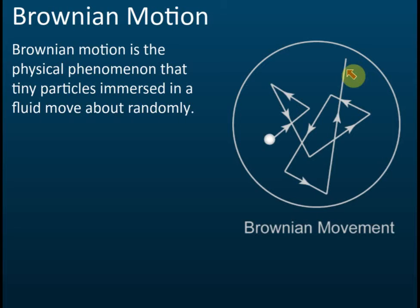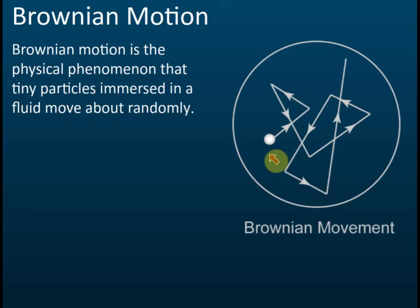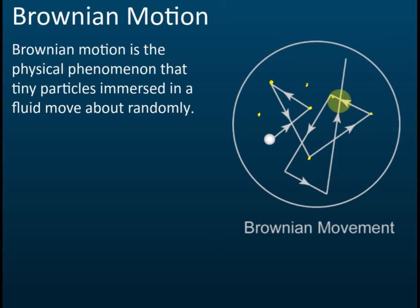At the time he couldn't explain why the particles moved that way, but he was the first to discover it, so people named it after him — Brownian motion. Nowadays we know why this happens: inside the water, there are many water particles, but we can't see them because they are very small.